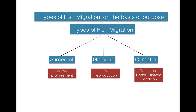Elemental fish migration means migration for food procurement — fishes migrate from one place to another in search of food. Gametic migration is for reproduction; fishes migrate for spawning. Climatic migration is for securing better climatic conditions, so fish migrate from one place to another to avoid harsh climatic conditions.